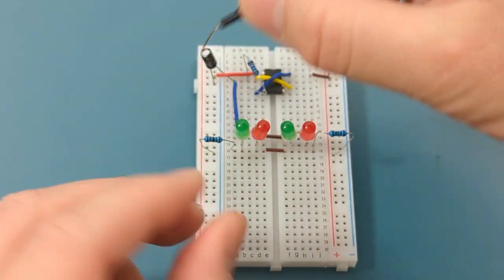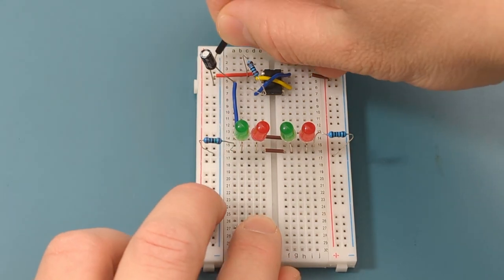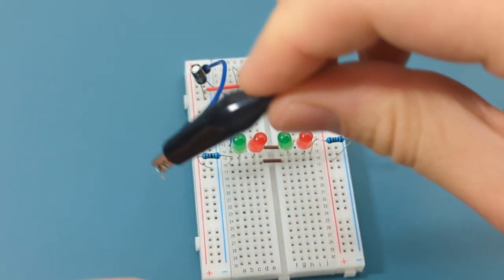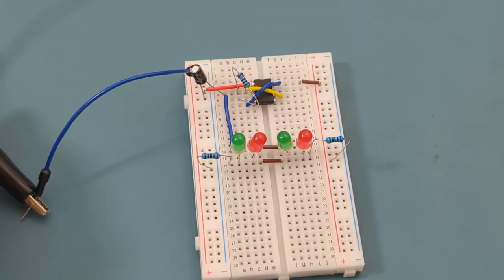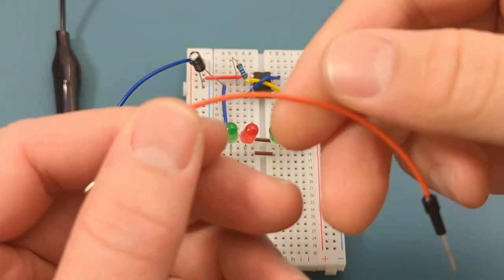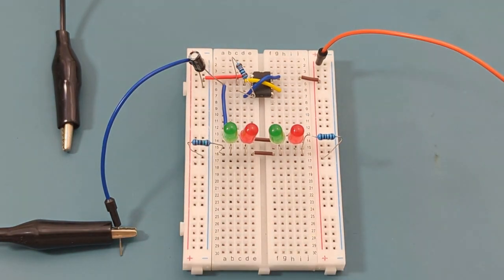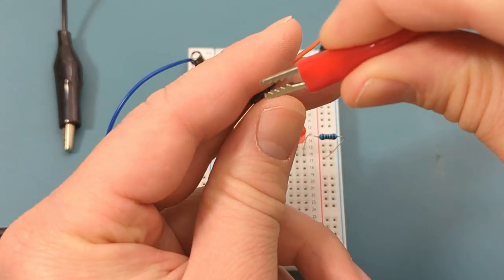Insert a jumper wire into the negative rail. Attach the black alligator clip to the jumper wire. Insert a jumper wire into the positive rail. Attach the red alligator clip to the jumper wire.